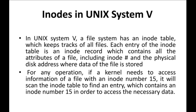In the UNIX file system we have an INODES table. What it does is the INODES table keeps track of all files — whatever files are present in your operating system, the details of all those files will be in the INODES table. Each entry of the INODES table is an INODES record. This INODES record contains all the attributes of a file. One entry will exist for one file.